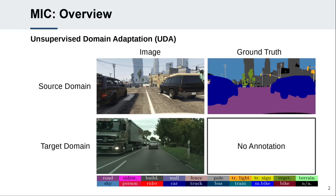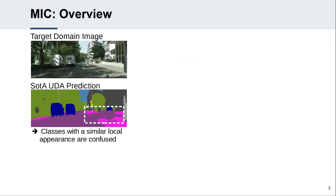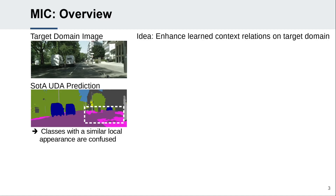In UDA, a model trained on a source domain is adapted to a target domain without access to target annotations. However, even recent UDA methods struggle to distinguish classes with an ambiguous local appearance, such as road and sidewalk. Therefore, we propose to enhance the learning of context clues, such as the curb in the foreground.